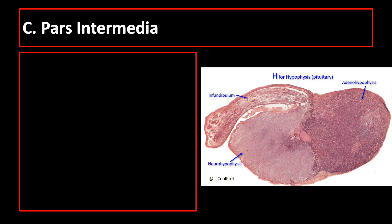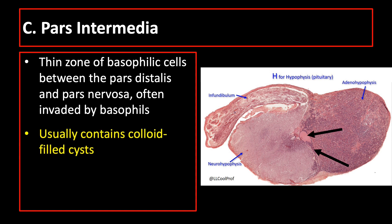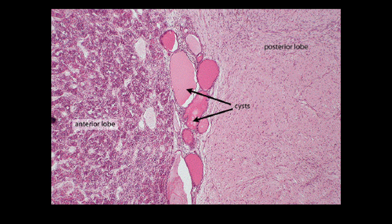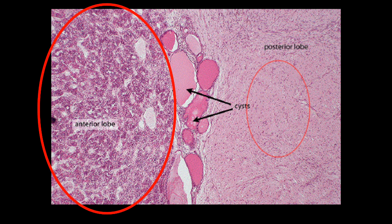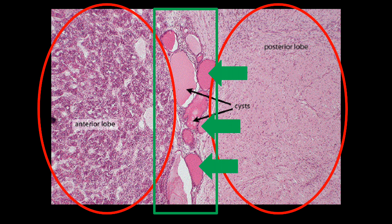The last part is the pars intermedia, which is a thin zone of basophilic cells between the pars distalis and pars nervosa. The histologic hallmark of this region is the presence of colloid-filled cysts. So if shown a cut section of the pituitary gland, the area with colloid-filled cysts is the pars intermedia. In this cut section, the anterior pituitary gland, posterior pituitary gland, and in between them the pars intermedia with colloid-filled cysts can be identified.